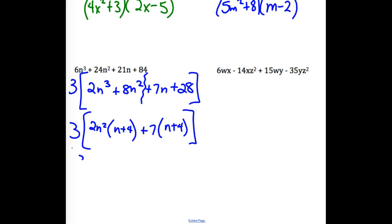Now, the 3 out front, my two factors from those four terms. I'm going to have a 2n squared plus 7, and then the common one of n plus 4. That is completely factored. That is your best answer.